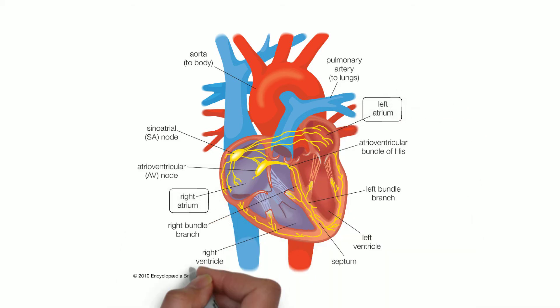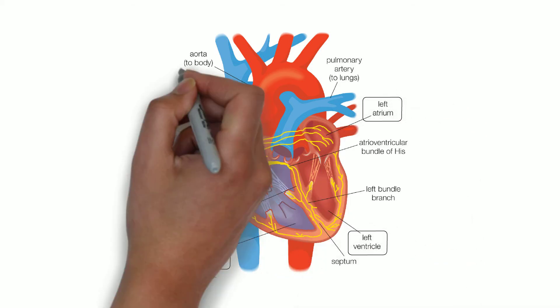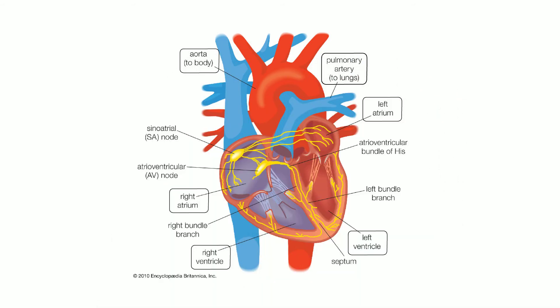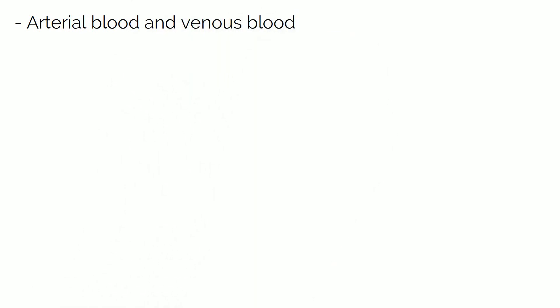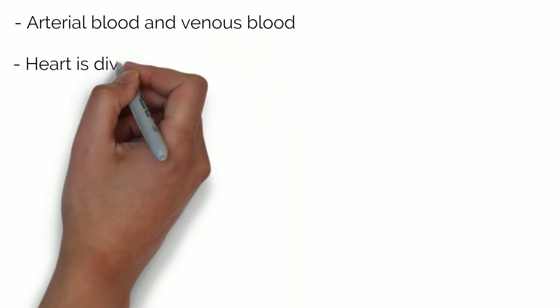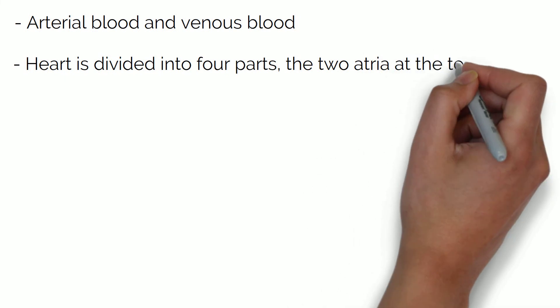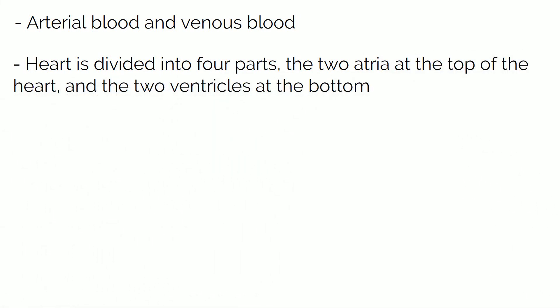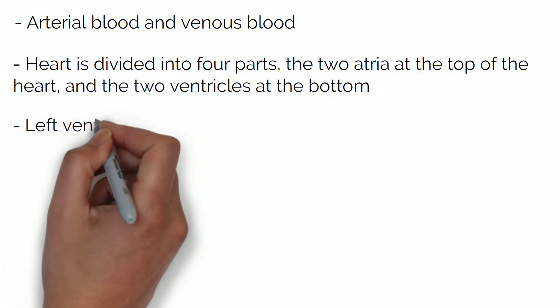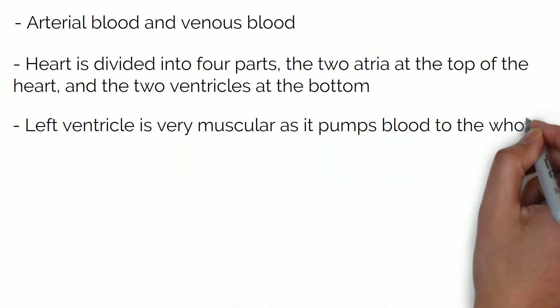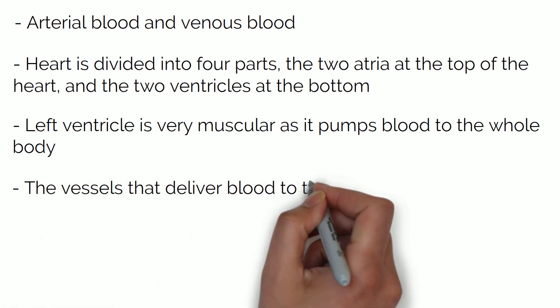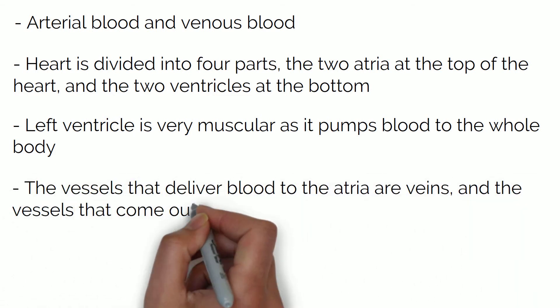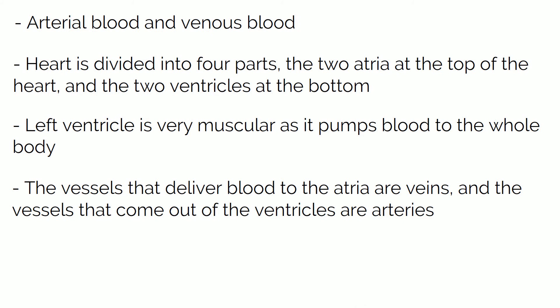Let's talk about the two atria and the two ventricles, as well as the veins, arteries, and valves. As you know, you have two types of blood: arterial blood and venous blood. The heart is divided into four parts — the two atria at the top and the two ventricles at the bottom. The ventricles are very muscular, especially the left ventricle, which pumps blood to the whole body. The vessels that deliver blood to the atria are always veins, and the vessels that come out of the ventricles are always arteries.